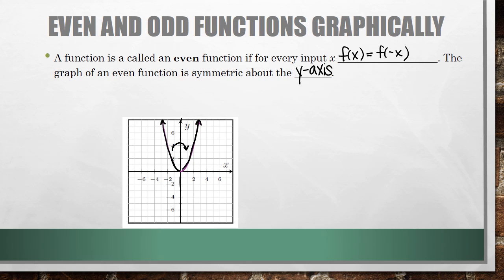Another way to look at it: if we look at f of x, let's look at an example such as f of 2. So f of 2 is 4 and f of negative 2 is also 4. That's a result of being symmetric about the y-axis.